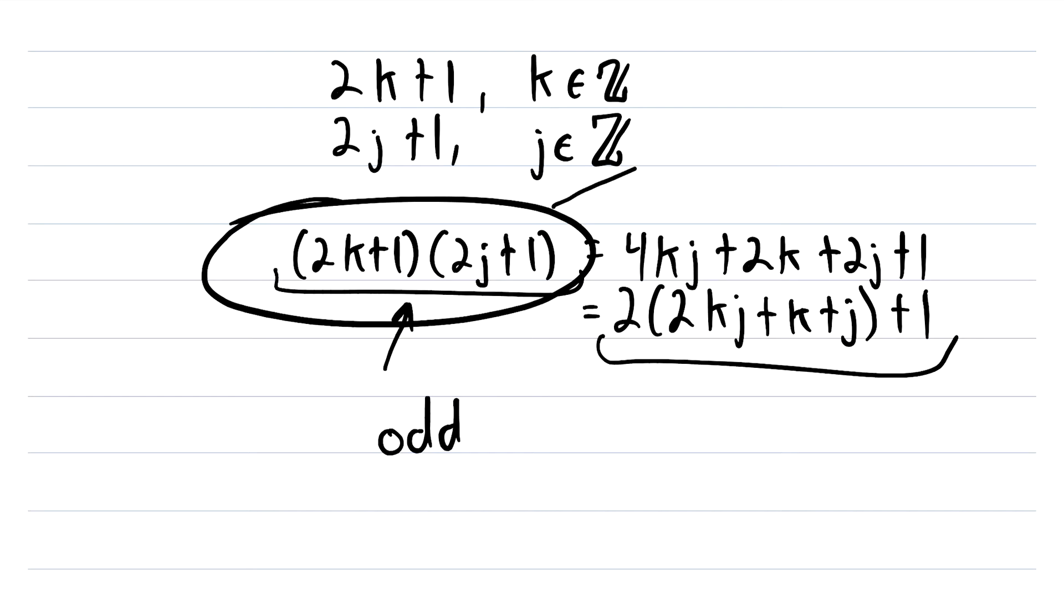Then to get from here to here, we just use the distributive property. And then to get from here to here, we just factor out a 2 from these first three terms. Then after that, we just have to notice that 2kj plus k plus j in the parentheses is an integer. And therefore, this whole expression is an odd number.